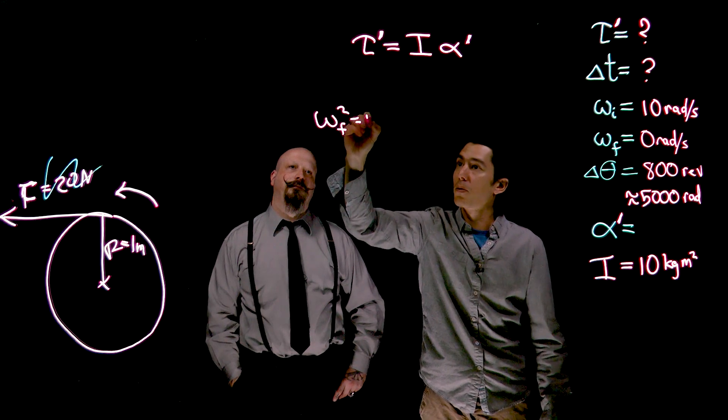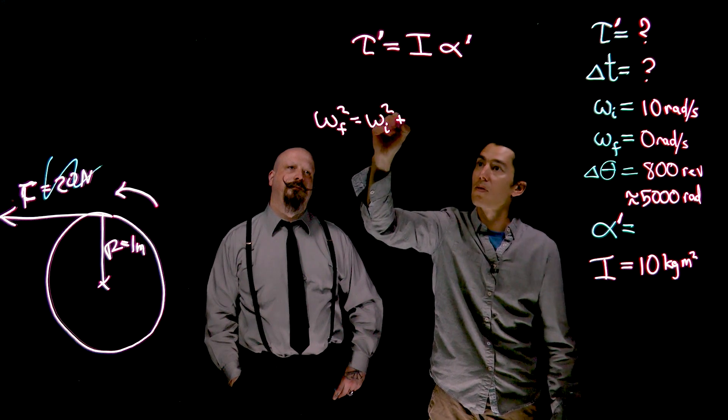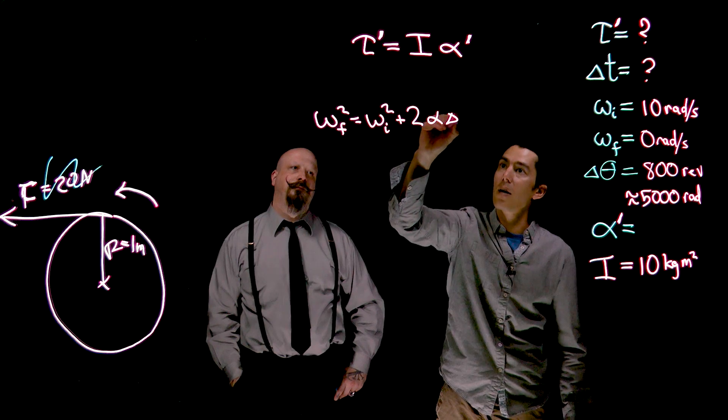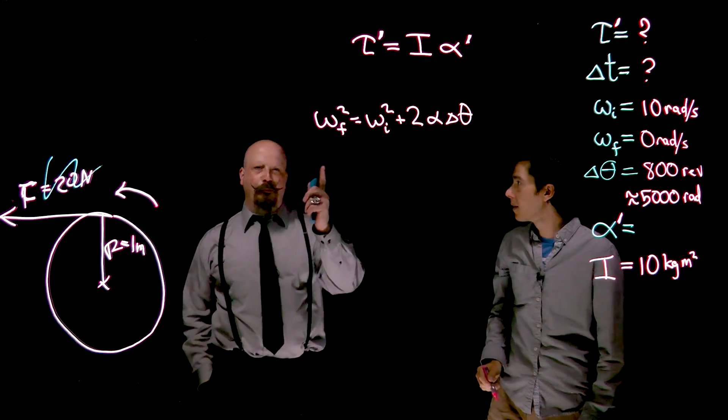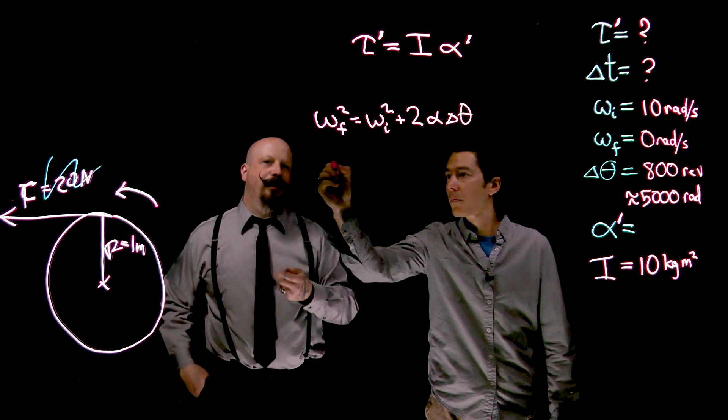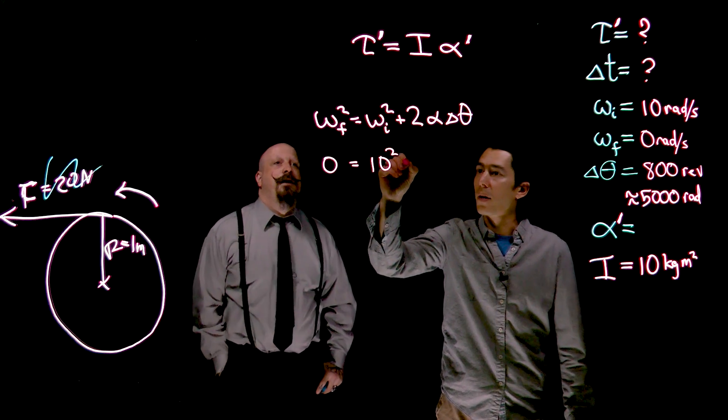So let's do this. ω final squared is equal to ω initial squared plus 2 times the acceleration times the displacement. Now this might look familiar. We did linear kinematics equations that had very similar format.